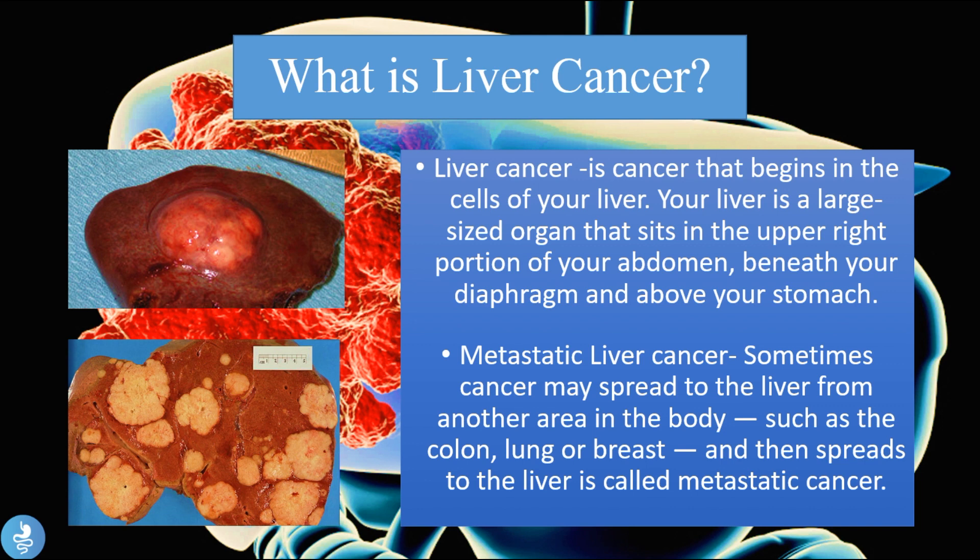Metastatic liver cancer may occur sometimes because cancer may spread to the liver from another area in the body, such as the colon, the lung or the breast, and spreads to the liver from these specific organs. This is called metastatic liver cancer.